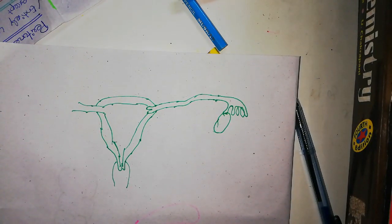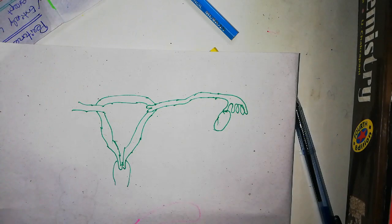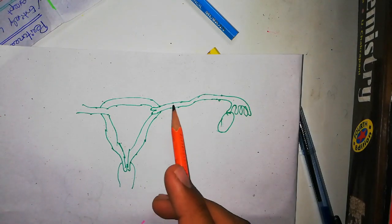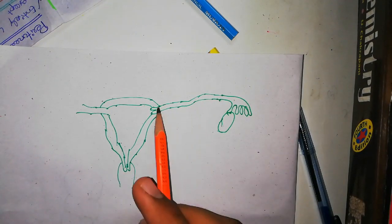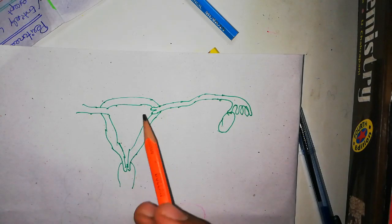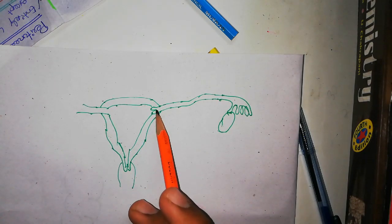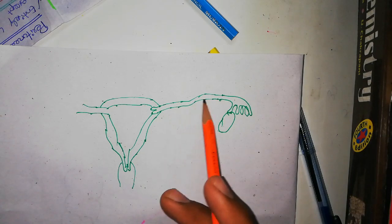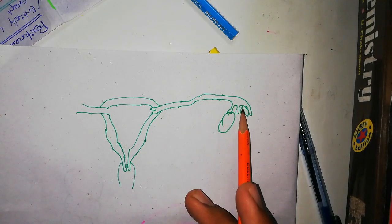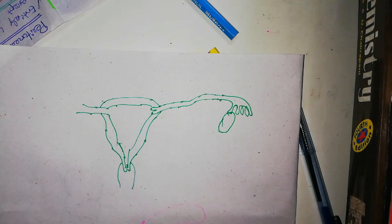So guys, this is a very rough diagram of the fallopian tube. The aim of this diagram is to show you the fallopian tube. It actually starts from the uterus, goes laterally, and ends above the ovary.